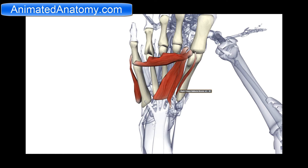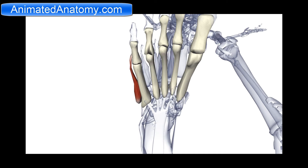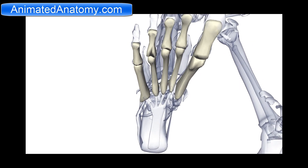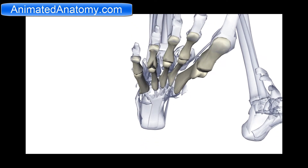Now there are only two more groups of muscles left that I will explain, and that is the interossei muscles. We have dorsal interossei muscles and we have the plantar interossei muscles. Let's start by explaining the dorsal interossei muscles.